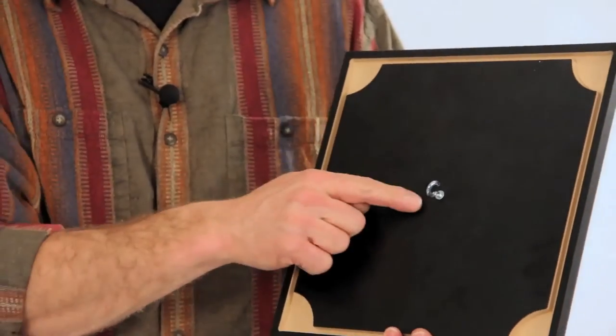The first thing we did was put a threaded insert on the underside of the lid that accepts this little U-hook that we provide.